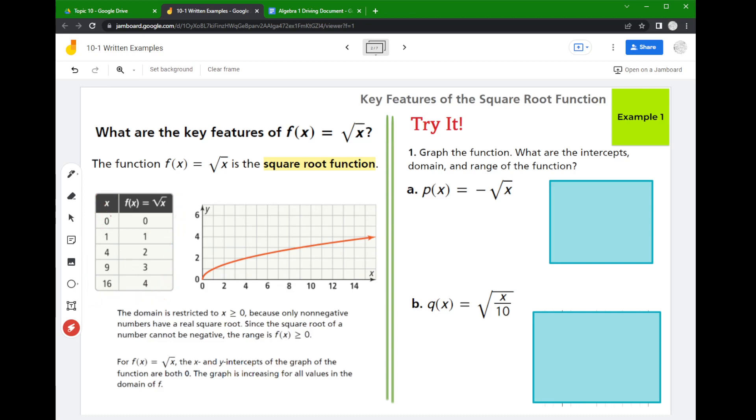Now notice for the x values they picked all these nice little perfect squares, so 0, 1, 4, 9, 16, those are all perfect squares. And when they take the square root of them they get 0 through 4 here.